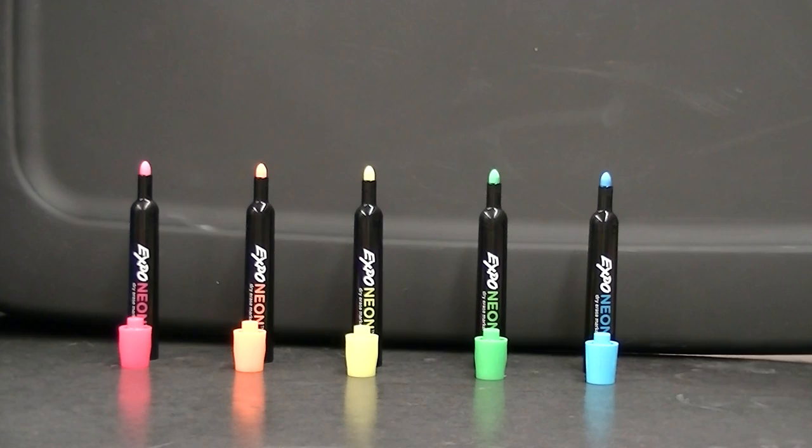I'm going to turn out the lights and shine the UV light onto the marker lids and marker tips. By doing so, we'll be able to see which marker lids and tips contain dyes that fluoresce. I can see pretty easily that the pink marker lid, the orange marker lid, and the yellow marker lid, which is fluorescing green, all contain dyes that fluoresce, whereas the green marker lid and the blue marker lid do not.